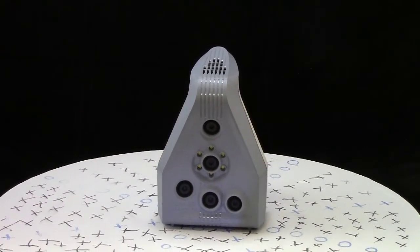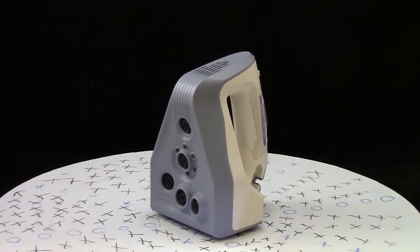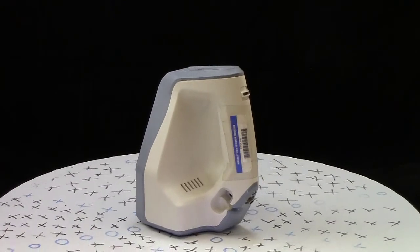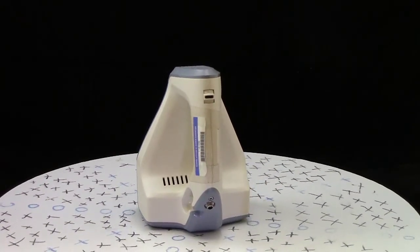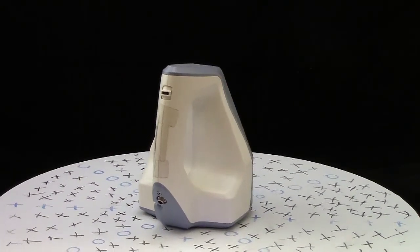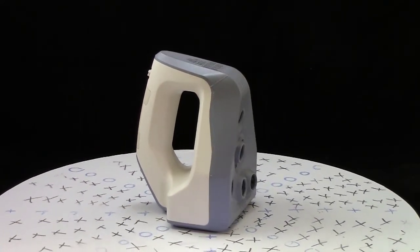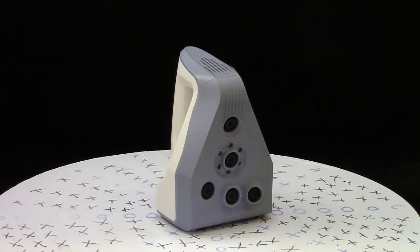The Artec Spider is great for capturing small objects with complex geometry, sharp edges, and thin ribs. It provides up to 0.1 mm of resolution and 0.05 mm of 3D point accuracy. This scanner does not have internal storage or battery, so it must connect to a laptop or computer.